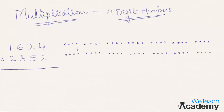Write 8 in the final result. Step two: unit digit is multiplied with the tens digit of the other number and vice versa. Here 4 into 5 is 20, and 2 into 2 is 4, so 20 plus 4 gives 24. The 4 goes to the final result and 2 is carried forward to the next step.